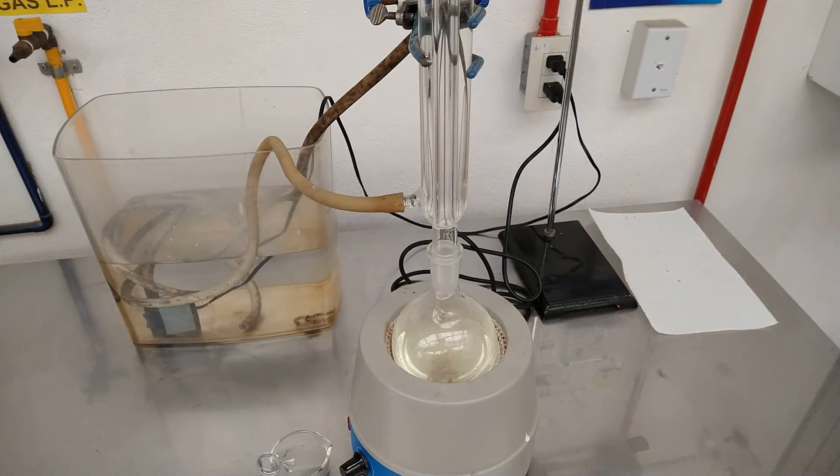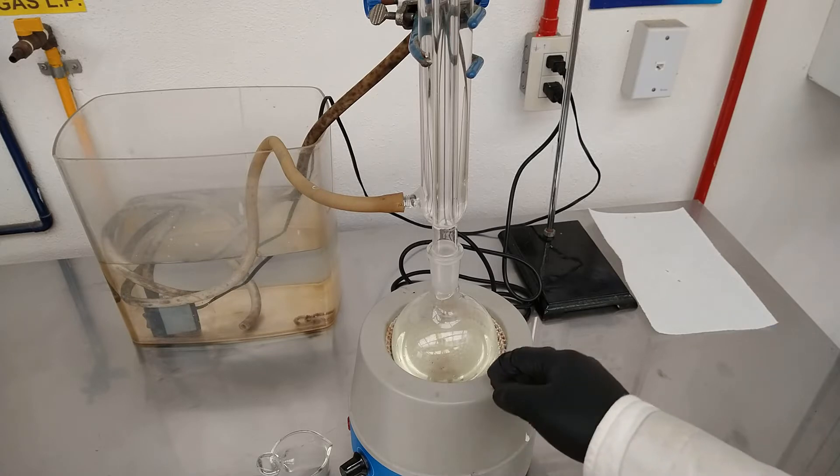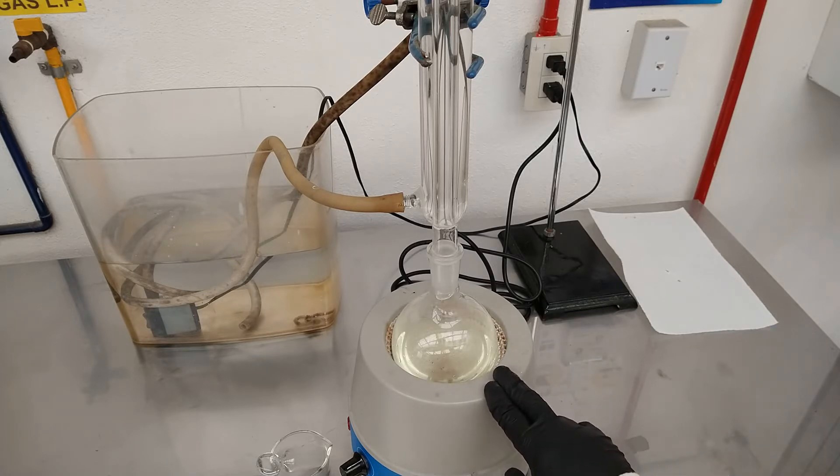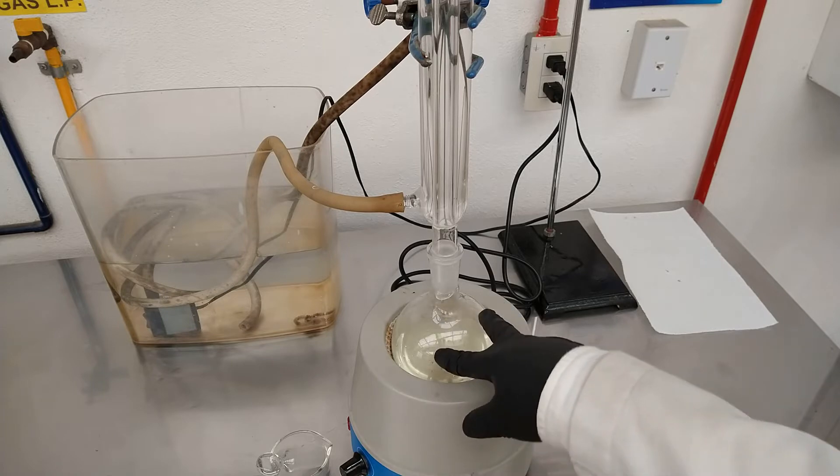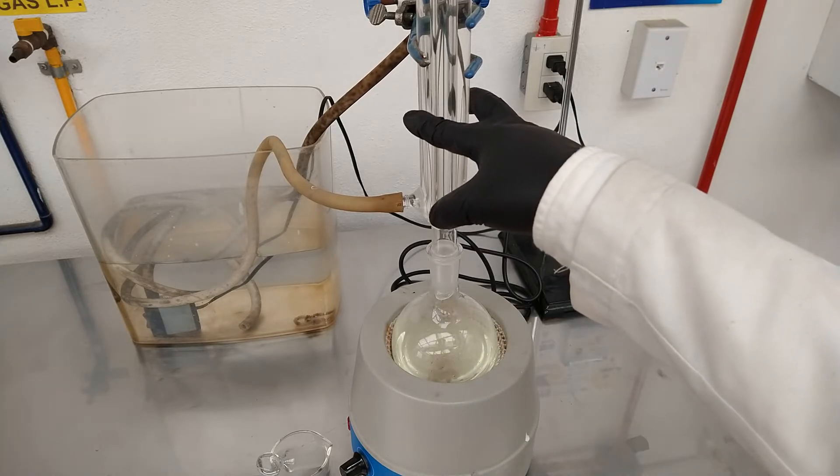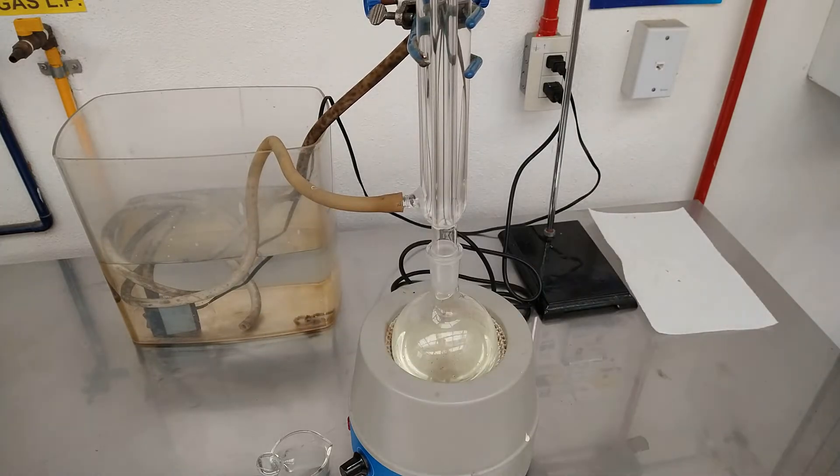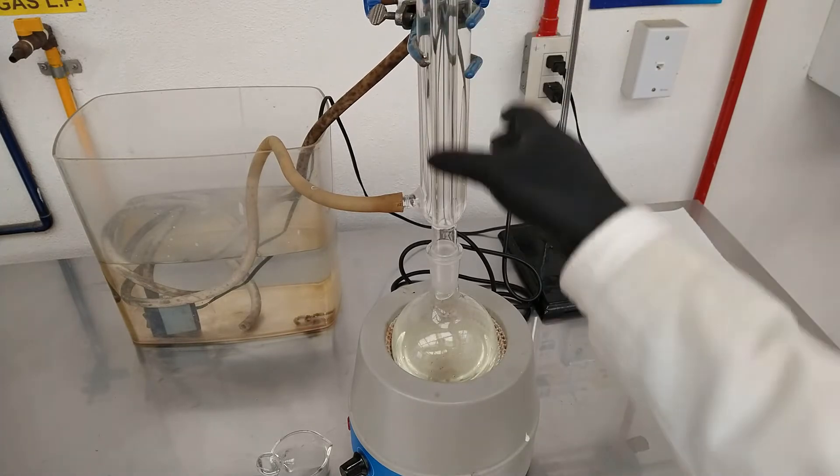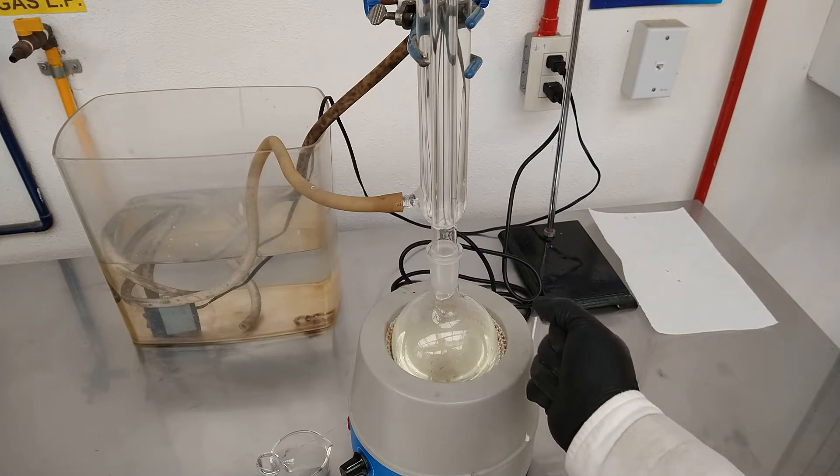So now that all of the reagents have been added, we can begin the refluxing of the reaction for 8 hours. So this is our setup. We have our flask, our condenser, the pump and the heating mantle. So we add a couple of boiling chips to prevent sudden boiling.